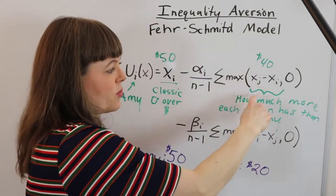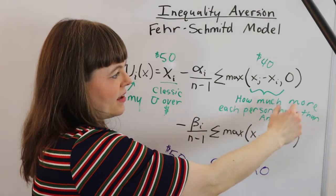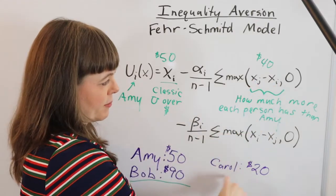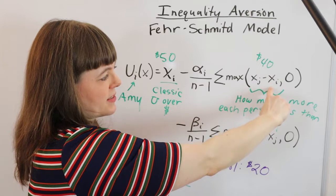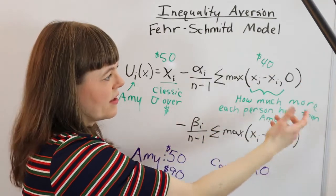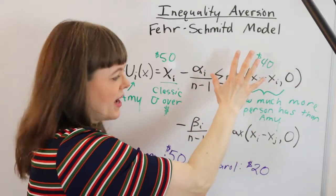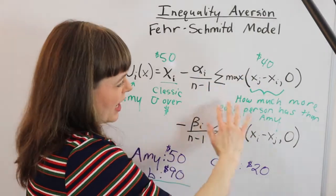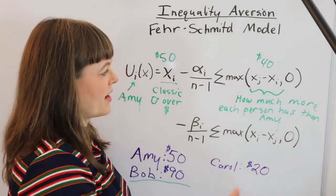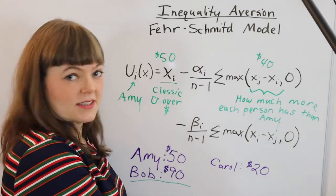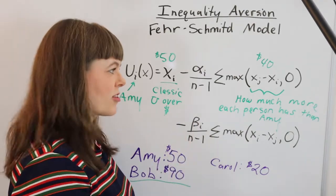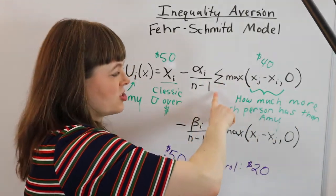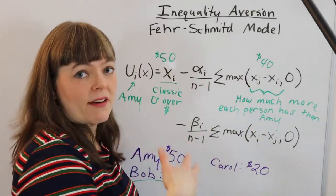I'm labeling this with how much more each person has than Amy. The zero here is basically saying: if somebody has less than Amy — for example Carol — then Carol's twenty dollars minus Amy's fifty dollars is going to be negative, in which case just put a zero here, because we're not dealing with that in this term. We're going to put that in a separate part of our function. So we're capturing how much more each person has than Amy. If we added more people, like Devon with a hundred twenty dollars, he'd be added into this function as well. Everybody in this part of the equation has more than Amy.